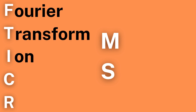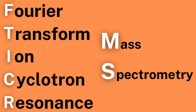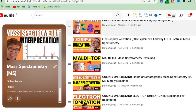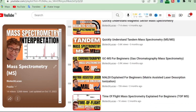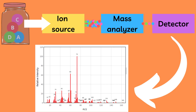Fourier transform ion cyclotron resonance mass spectrometry, or more simply FT-ICR MS. It's a type of mass spectrometry that is used to identify and characterize molecules. We have already looked at a lot of different mass spectrometry techniques on the channel — link to the playlist by the end of this video — but this is by far the mass analyzer with the highest resolution that we have looked at so far. But before I explain why it has such high resolution, let us quickly look at the different parts of mass spectrometry so you better understand how FT-ICR fits in.